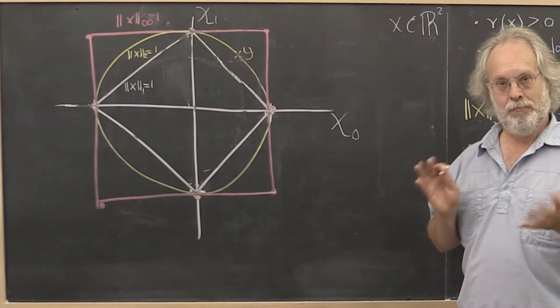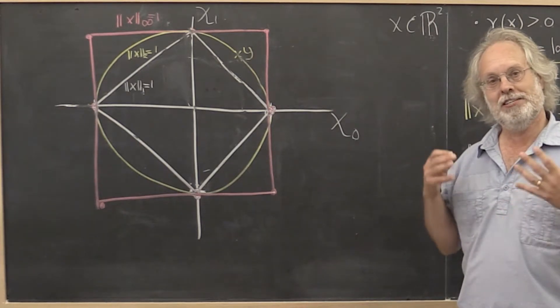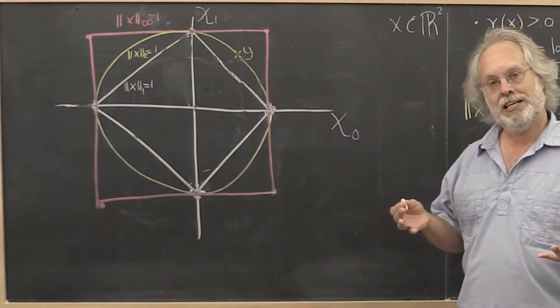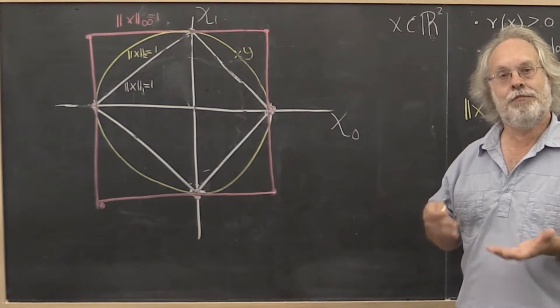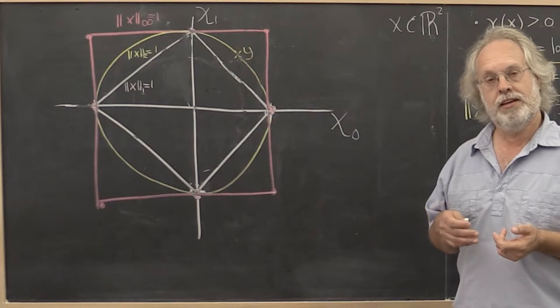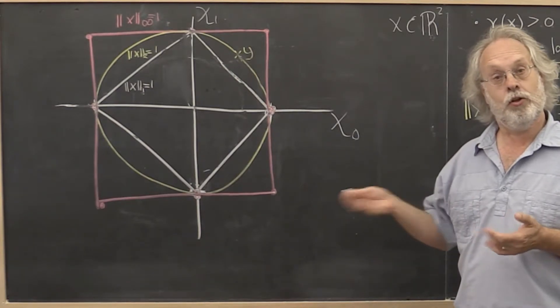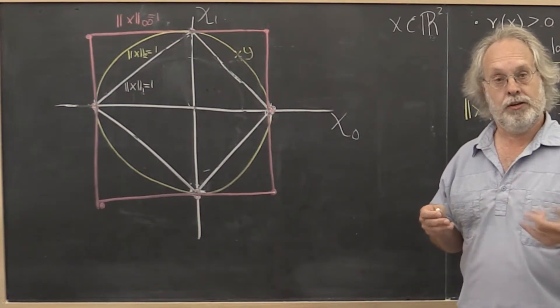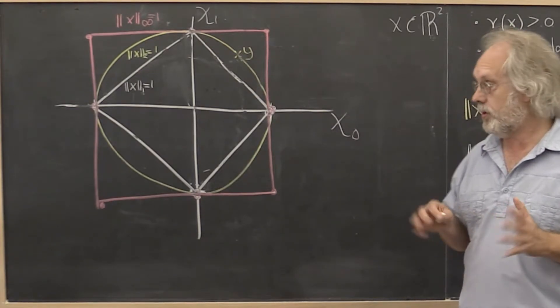We now get to a really important concept known as the equivalence of norms. What it essentially says is that if a vector is large in one norm, then it's large in another norm. And if a vector is small in one norm, then it's small in all other norms.